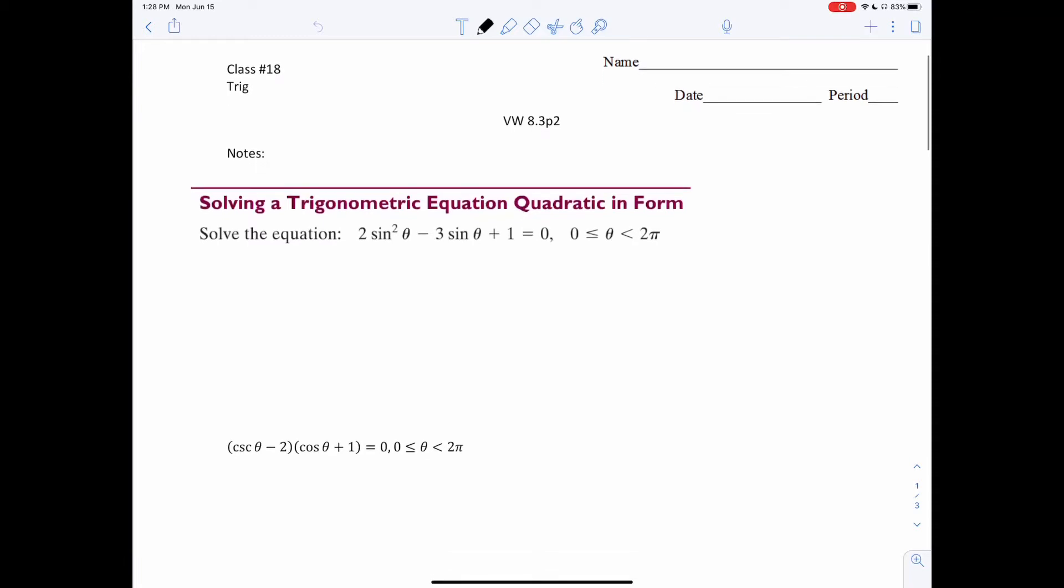We're going to finish up our video on equations right here. Notice how right here we have a quadratic equation. So I'm going to do a u substitution. I'm going to say let u equal sine theta. By doing this I get 2u squared minus 3u plus 1 is equal to 0. Now I can factor it.